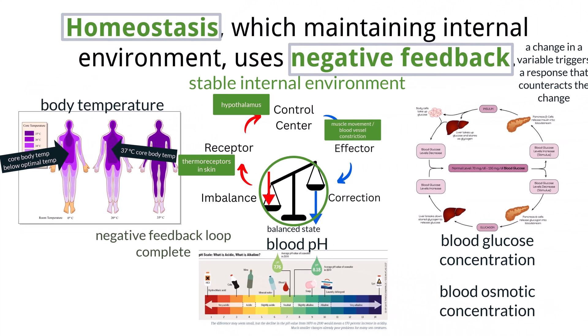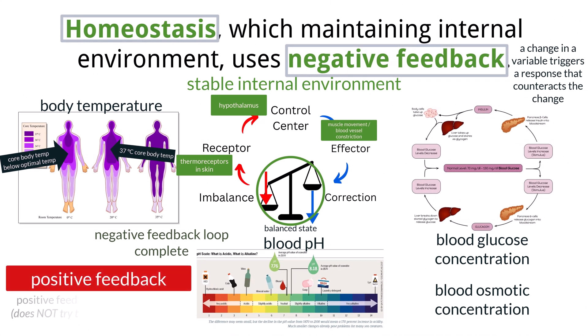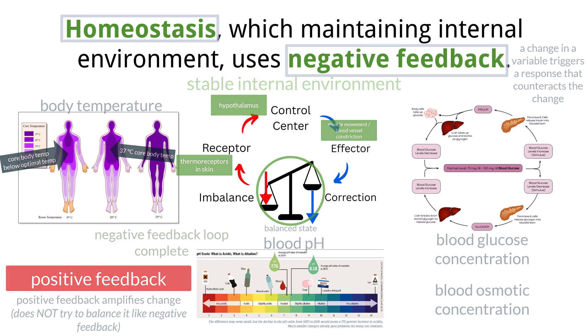On the other hand, positive feedback works to amplify or promote change. Positive feedback loops are not used to maintain homeostasis, but can be useful in certain circumstances, such as childbirth or fruit ripening. Maintaining homeostasis allows the body to keep internal conditions within narrow limits, even when the external environment changes. This is essential for enzyme activity and cellular function and allows organisms to adapt to diverse environments.